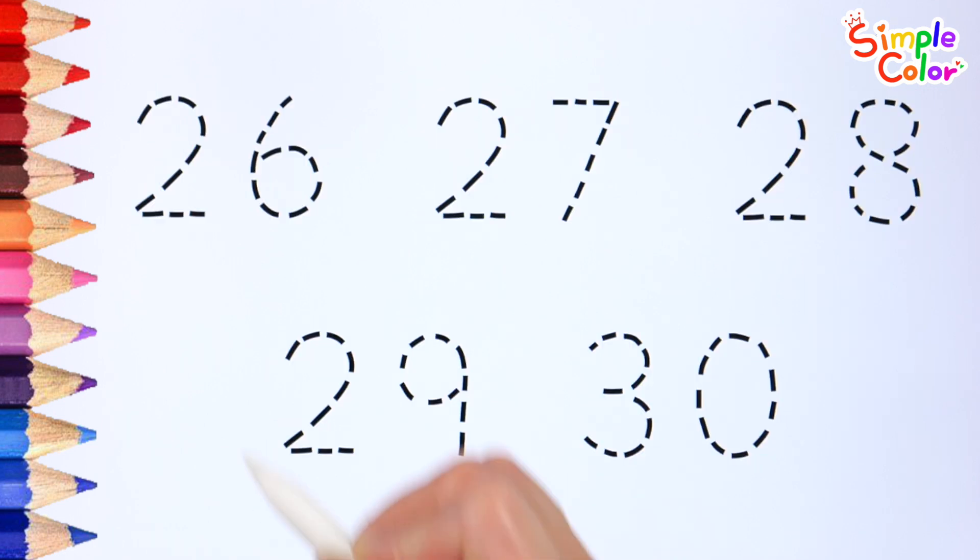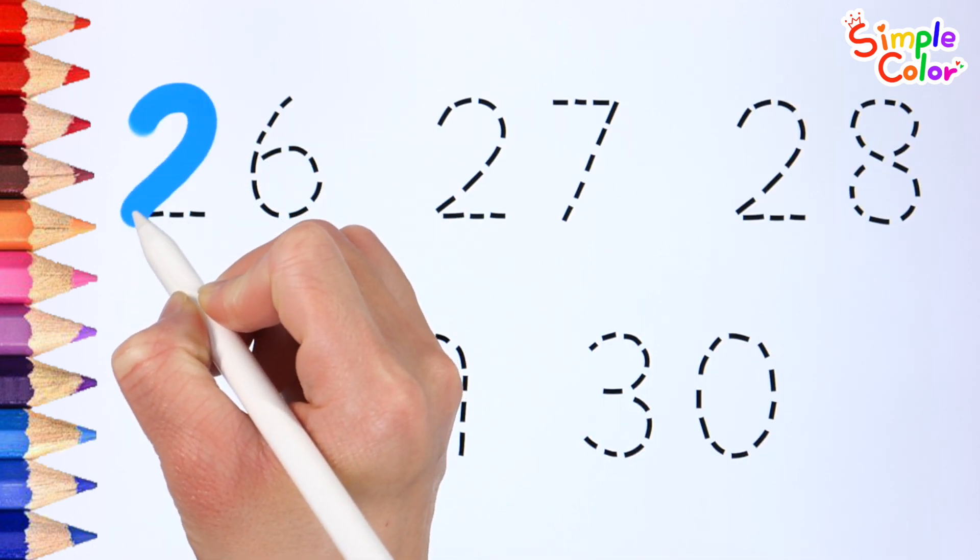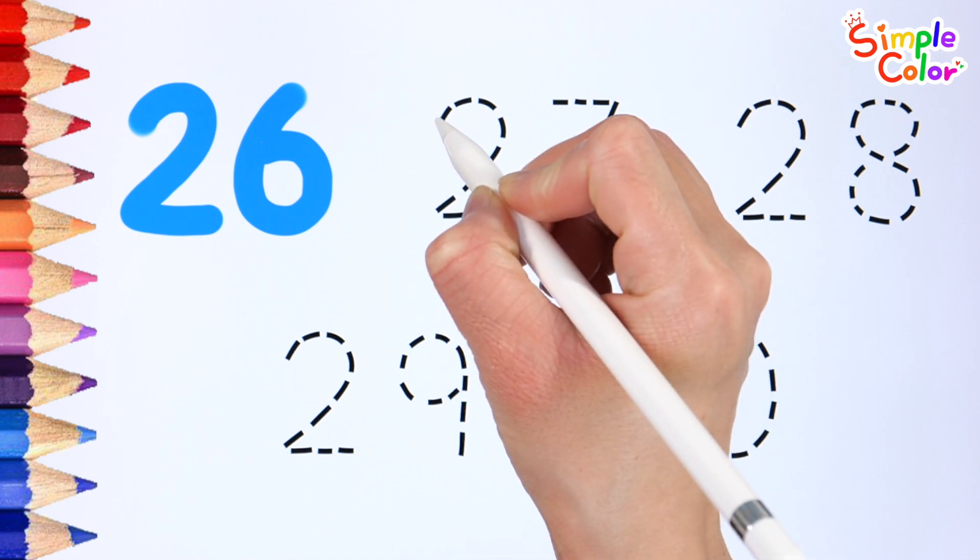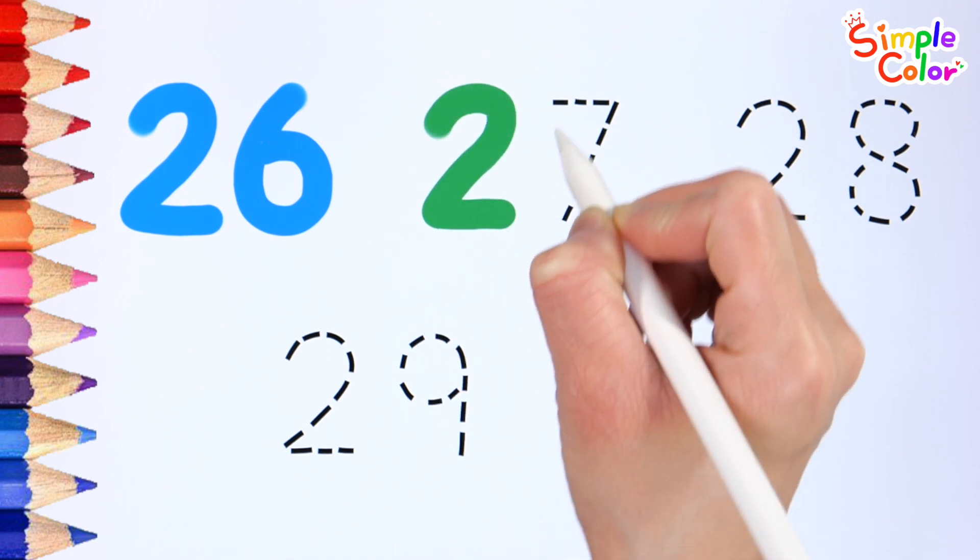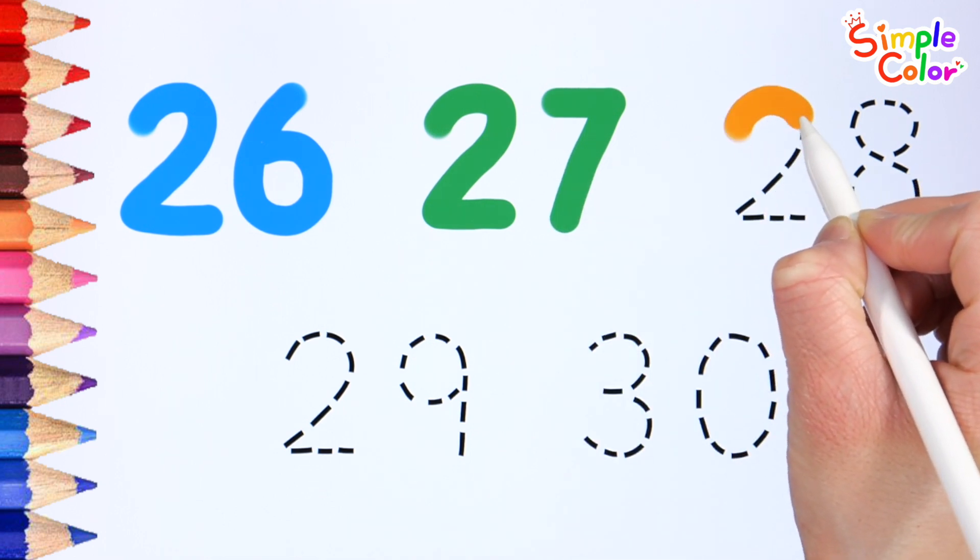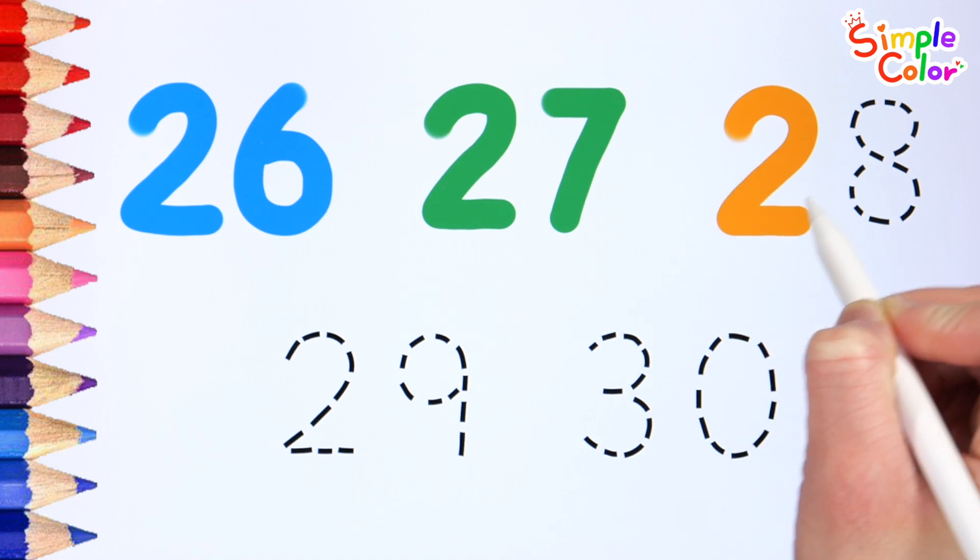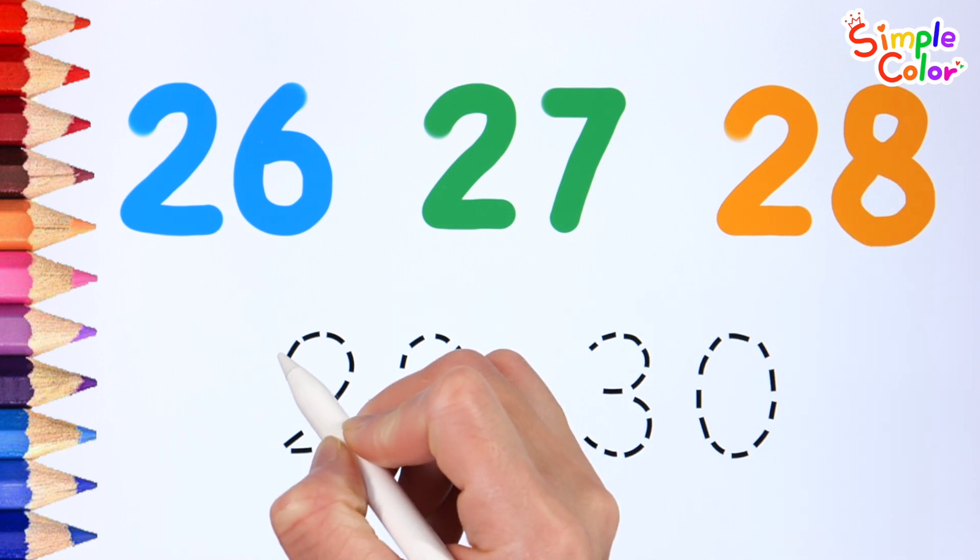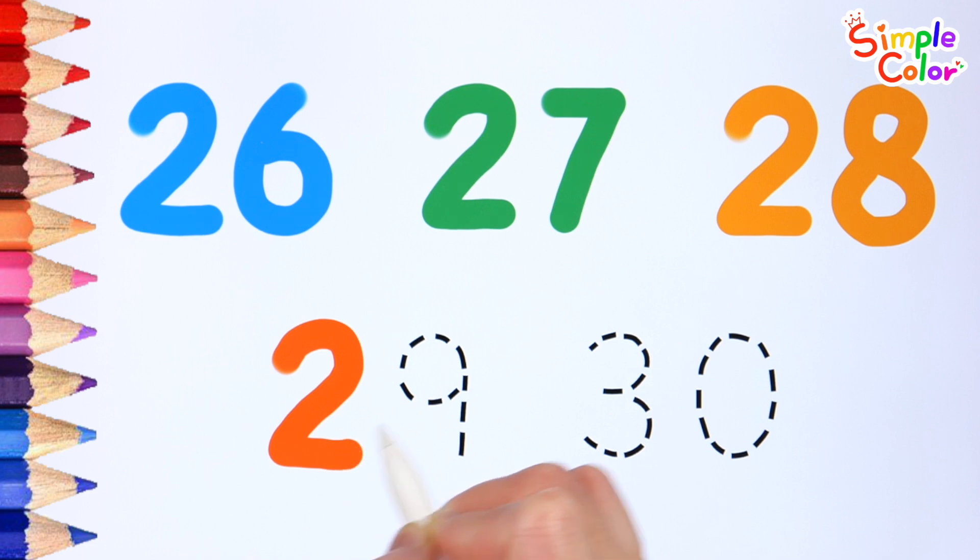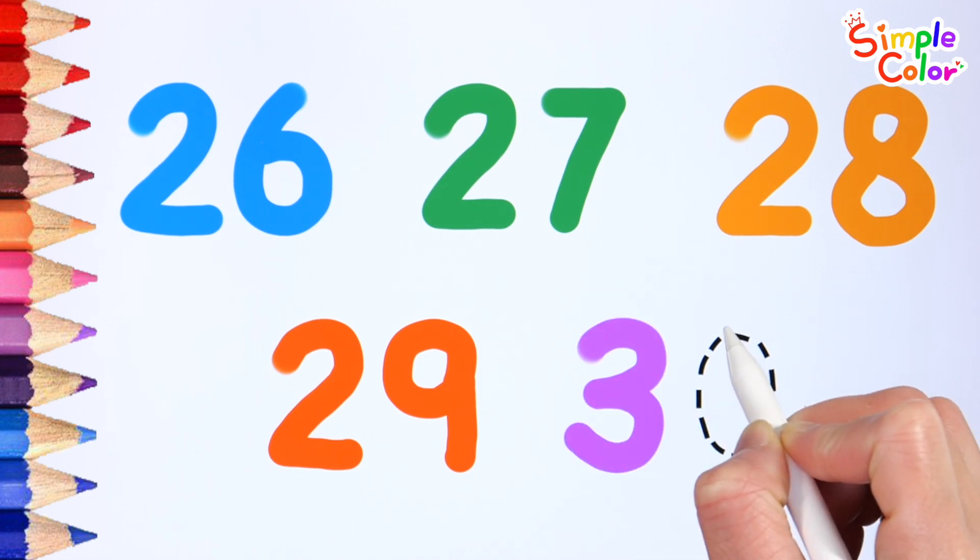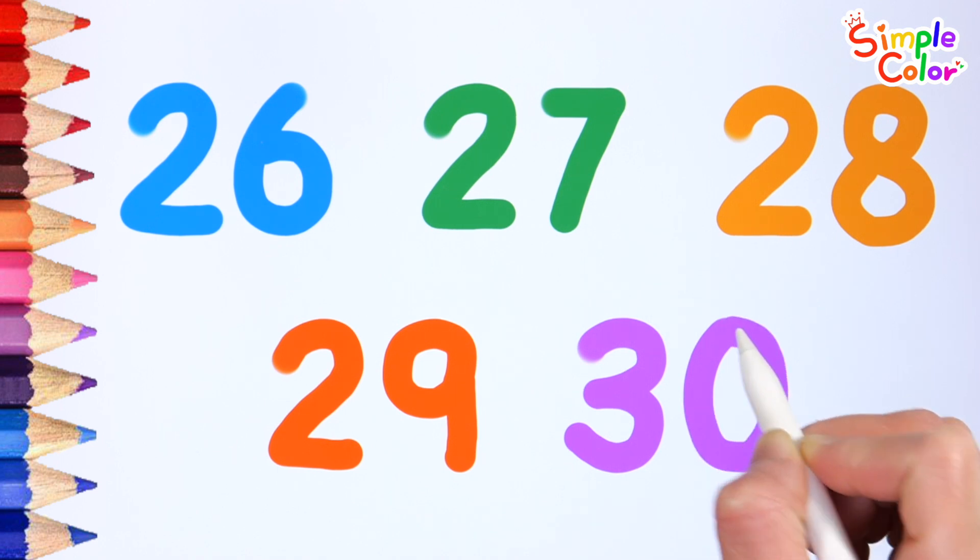Let's write from 26 to 30 along the dotted line. 26, 27, 28, 29, 30.